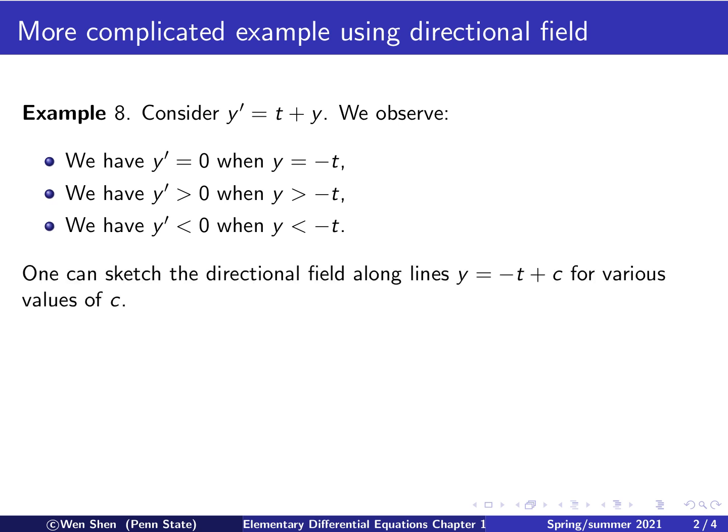Well, unfortunately, this information is not enough for us to sketch the directional field. We need to get more specific information. So here's the idea. Let's attempt to sketch the directional field along the line y equals negative t plus c for various values of c. The reason for that will be clear quite soon.